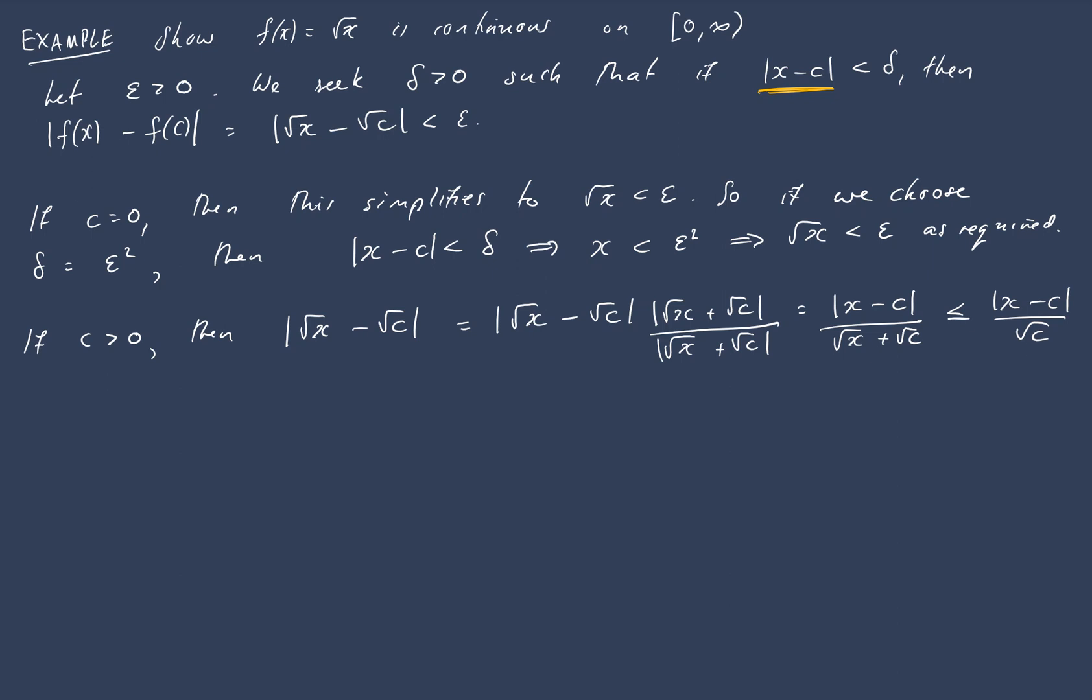So that gives us what our choice of delta should be. We want this root c to cancel off. So we'll choose, in this case, delta to equal epsilon root c. Then if the absolute value of x minus c is less than epsilon root c...